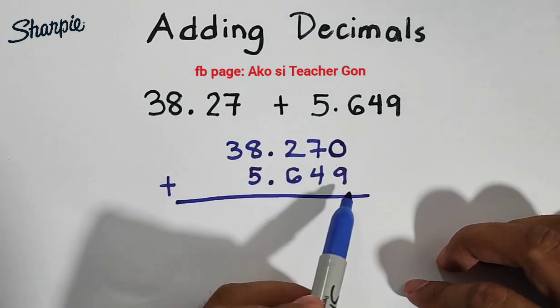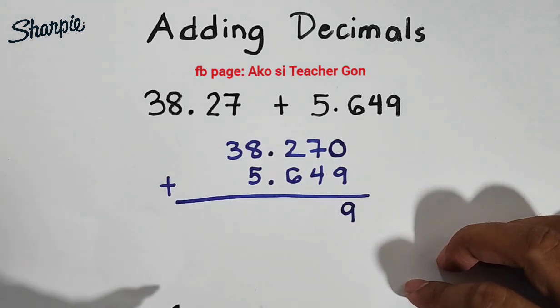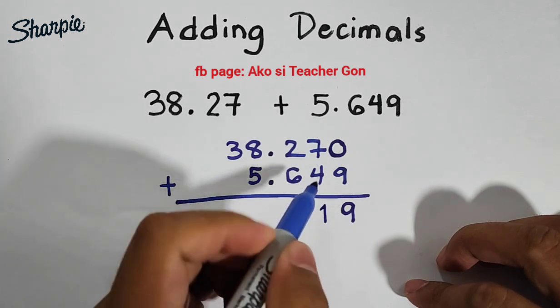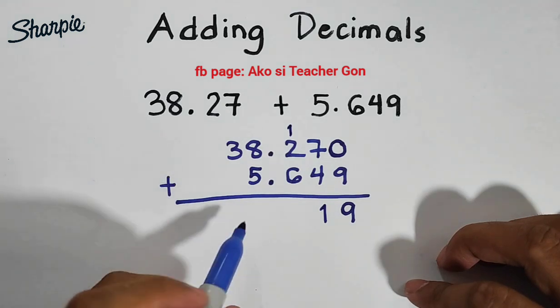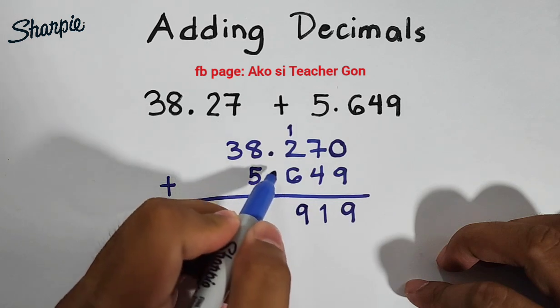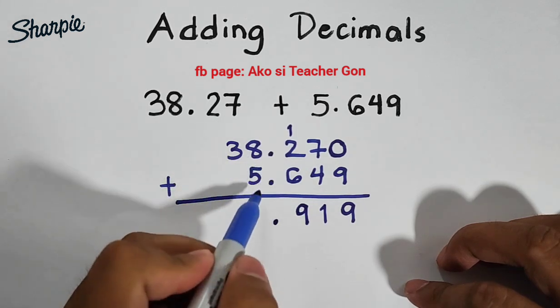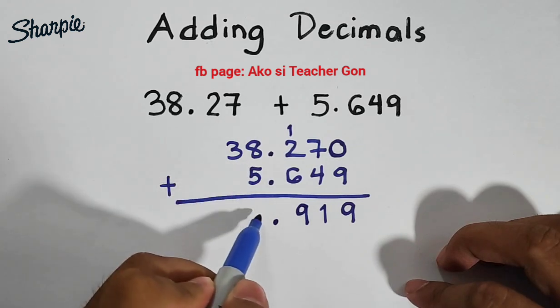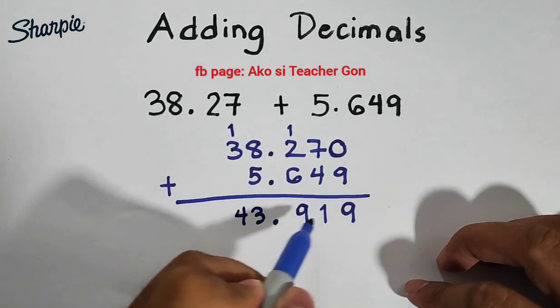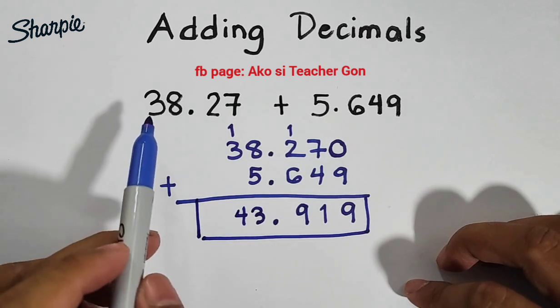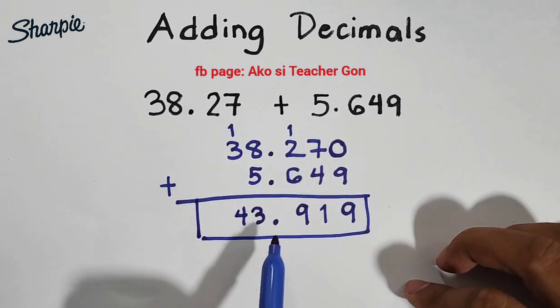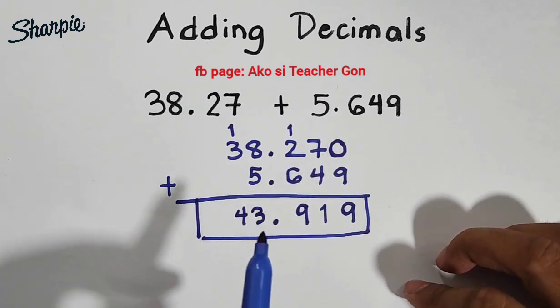We have 0 plus 9 that is equal to 9. 7 plus 4 that is equal to 11. We will put here 1 and then we will carry 1. 1 plus 2 plus 6 is equal to 9. Copy the decimal point. 3 plus 5 is 8, and lastly 3 plus 0 is 3. Therefore when we add 38.27 and 5.649 their sum is 43.919.